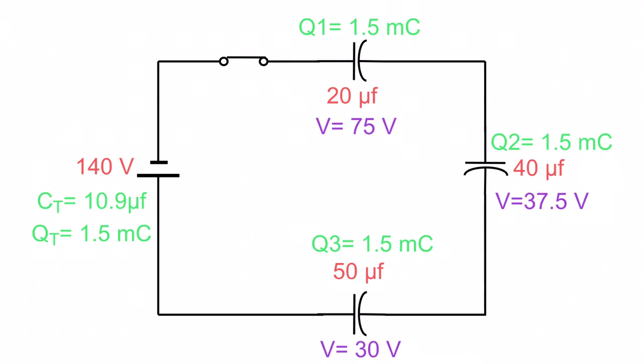I take 1.5 millicoulombs divided by 20 microfarads and I get 75 volts. I got 1.5 millicoulombs divided by 40 microfarads and I get 37.5 volts. And over here I've got 1.5 millicoulombs divided by 50 microfarads equals 30 volts.